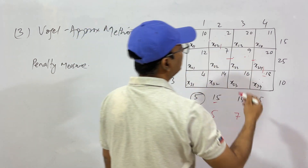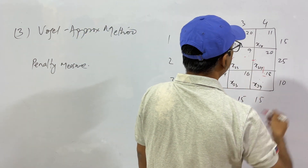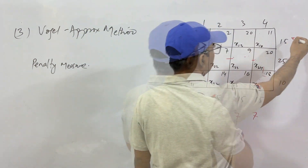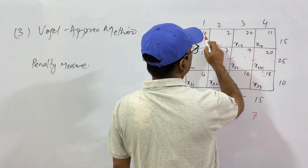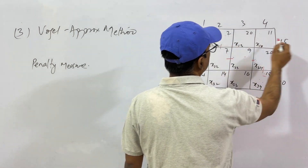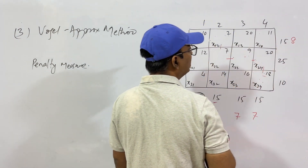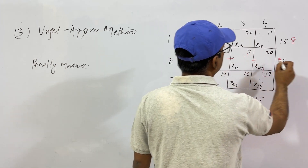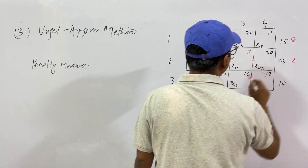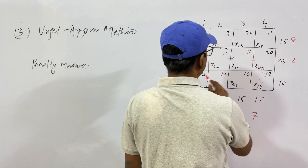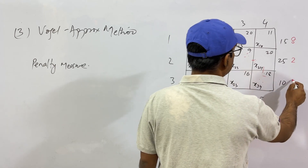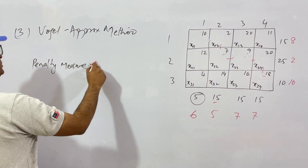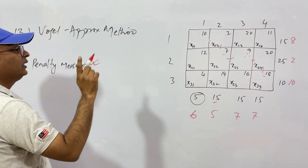For rows, the penalty measure is written similarly. Row 1: lowest cost is 2, next is 10, penalty = 8. Row 2: lowest is 7, next is 9, penalty = 2. Row 3: lowest is 4, next is 14, penalty = 10. The first step is to find the penalty measure for each row and each column.